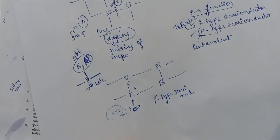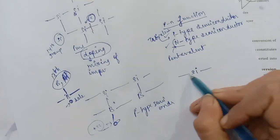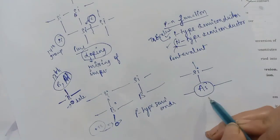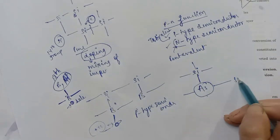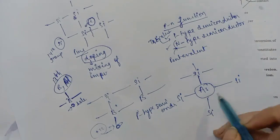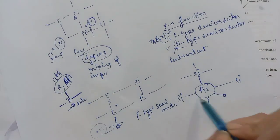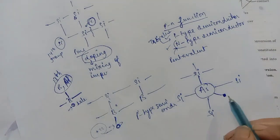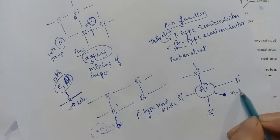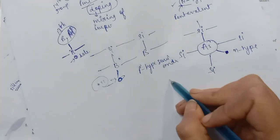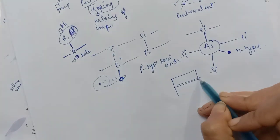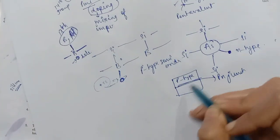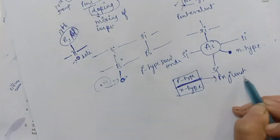For N-type: you take a pure silicon crystal and do doping with arsenic. Arsenic is pentavalent — it has five electrons in the outermost shell. When arsenic is added to silicon, there is one extra electron beyond the four needed for bonding. This creates an N-type semiconductor. Now if we join P-type semiconductor and N-type semiconductor, we get a PN junction.